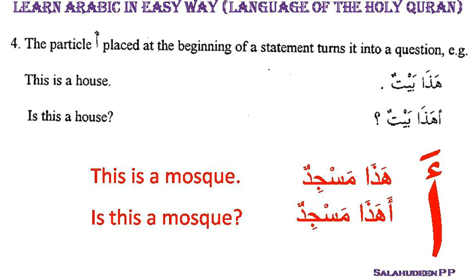For example, 'Hadha baytun' means 'this is a house'. When we put the particle 'a' at the beginning of this sentence, it becomes 'A-hadha baytun?' — meaning 'Is this a house?' Another example: 'Hadha masjidun' means 'this is a mosque', but when we put particle 'a' before it — 'A-hadha masjidun?' — the sentence becomes a question meaning 'Is this a mosque?'